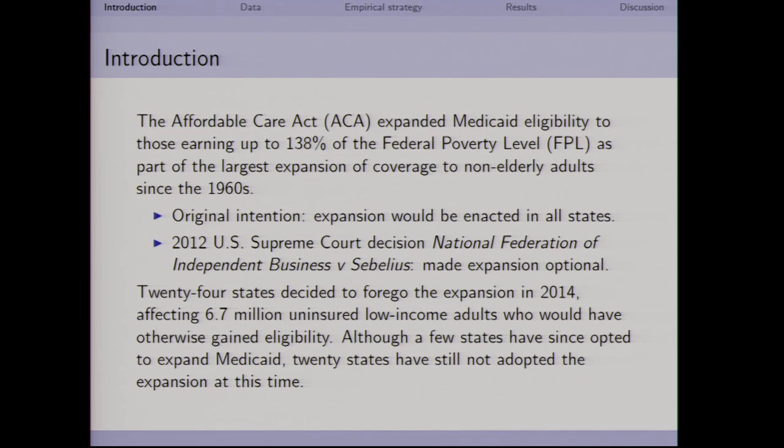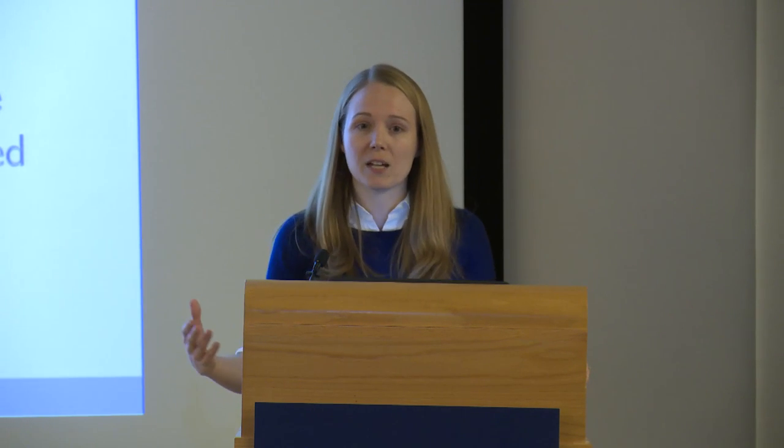Just to give you a little background on Medicaid: originally, prior to the Affordable Care Act, Medicaid was a program that provided health insurance to certain groups within the low-income population — low-income pregnant women, low-income children and families, and the disabled. As the Affordable Care Act was originally written, it was going to expand Medicaid eligibility to all low-income uninsured adults. In 2012, a Supreme Court decision made these Medicaid expansions optional. States could choose whether or not to expand Medicaid eligibility to individuals and households making up to 138% of the federal poverty level. In 2014, 24 states chose to forego these expansions.